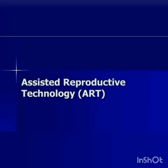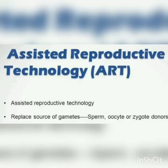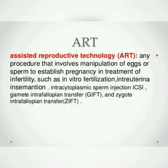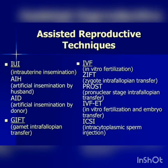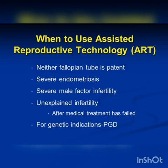Next we move on to Assisted Reproductive Technology, ART. ART is a collection of procedures which include the handling of gametes or embryos outside the body to achieve a pregnancy. ART includes intrauterine insemination (IUI), in vitro fertilization (IVF), embryo transfer, zygote intrafallopian transfer, gamete intrafallopian transfer, intracytoplasmic sperm injection, and surrogacy. ART increases the chance of pregnancy in infertile couples.